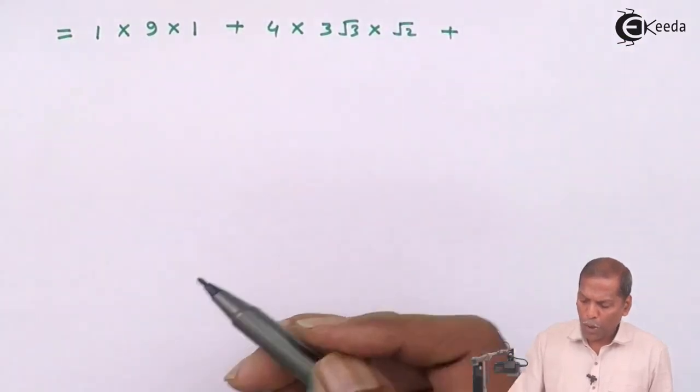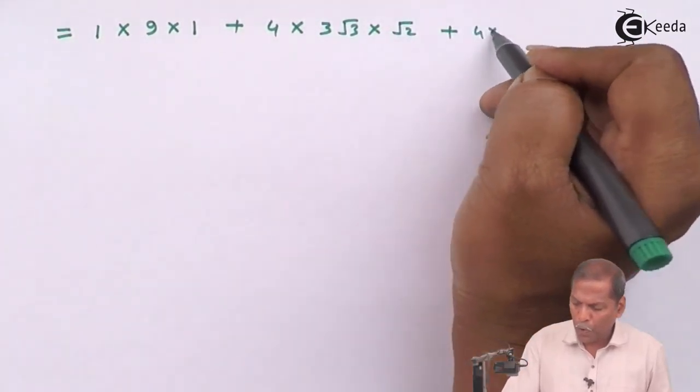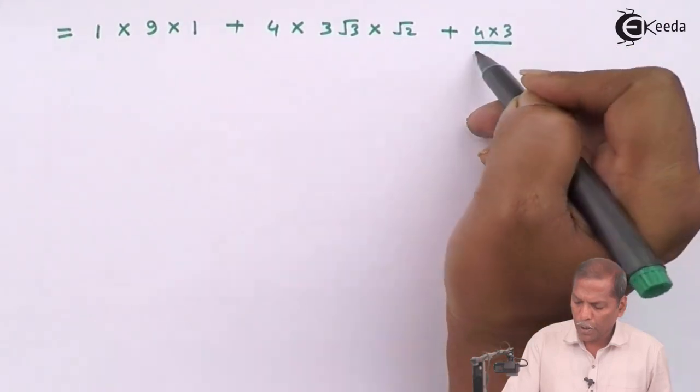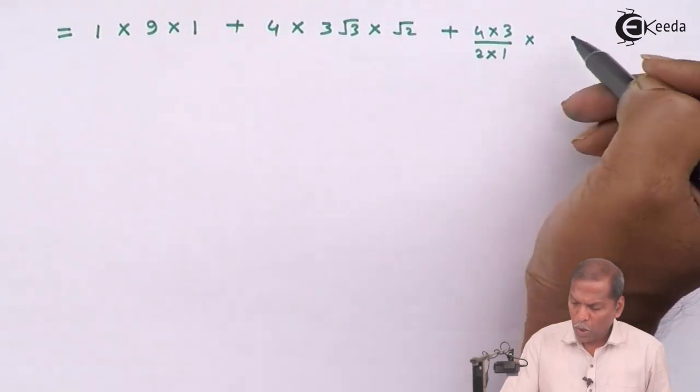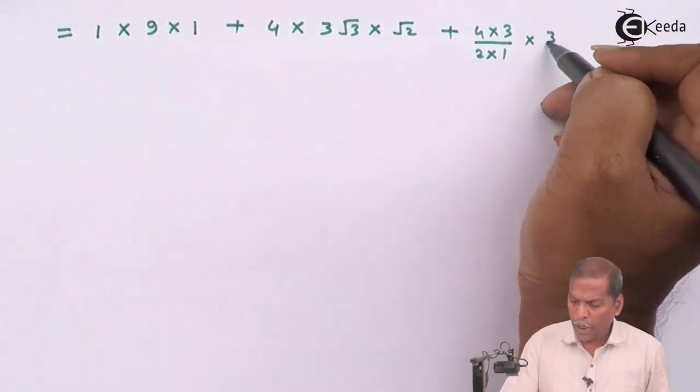Into root 2 raised 1 so that gives us root 2. Plus now 4C2 means 4 into 3 upon 2 into 1.